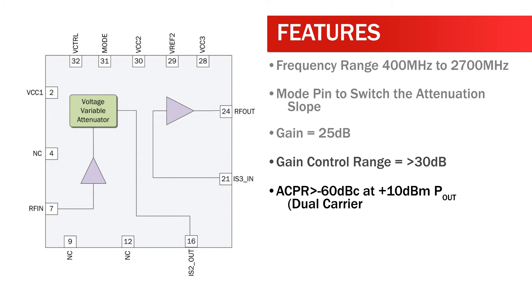ACPR greater than negative 60 dBc at plus 10 dBm Pout for dual-carrier WCDMA, small 5.2 mm x 5.2 mm multi-chip module, plus 5 volt supply.